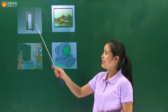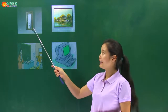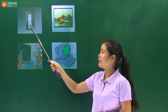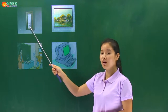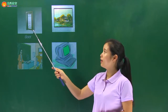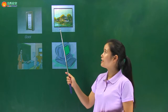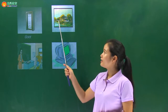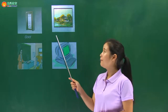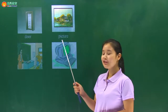Go on，next picture，It's a door，门，door. Now this one，墙上挂了一幅图画，picture.